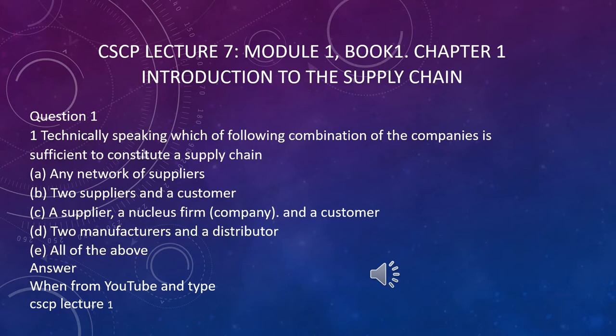Question number one: I'll give you a gap and then you have to think which is the right answer. Number one: technically speaking, which of the following combination of companies is sufficient to constitute a supply chain? A is any network of suppliers, B is two suppliers and a customer, C is a supplier, a nucleus firm, and a customer, D is two manufacturers and a distributor, E is all of the above. Think about which answer is correct.